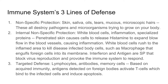Interferon and antigen are specialized proteins that block virus reproduction and provoke the immune system to respond. The third one, targeted defense, includes lymphocytes, antibodies, and memory cells. It's based on acquired immunity, and antigens detect foreign bodies that activate T-cells, which bind to the infected cells and induce apoptosis in those cells.